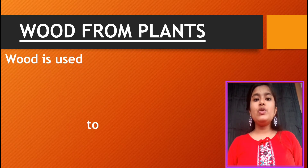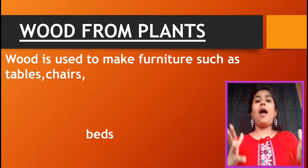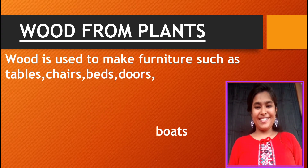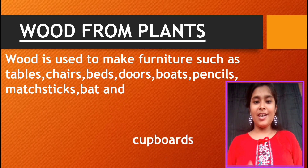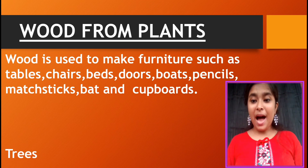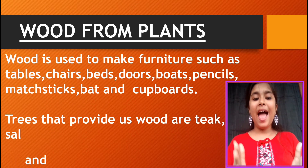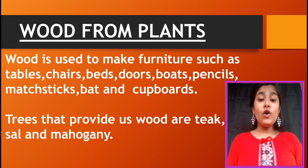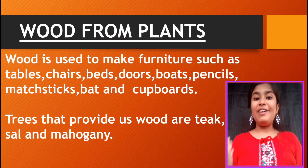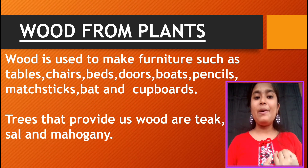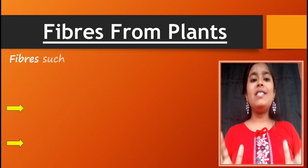Now we will study about wood from plants. Wood is used to make furniture such as tables, chairs, beds, doors, boats, pencils, cricket bats and cupboards. Trees that provide us wood include teak, sal and mahogany. So wood is also obtained from plants, and we need wood to make all kinds of furniture and household items.